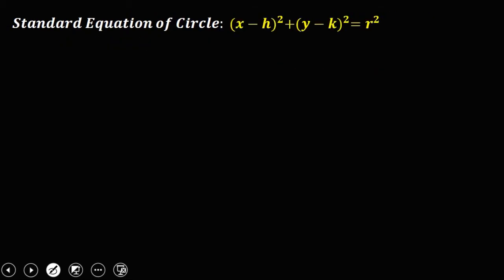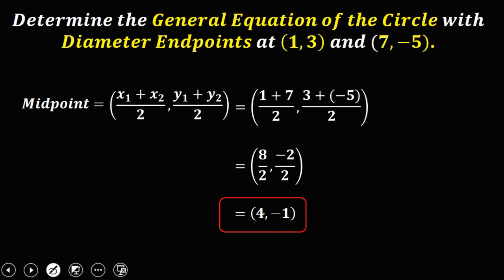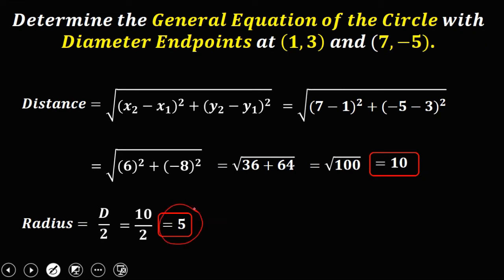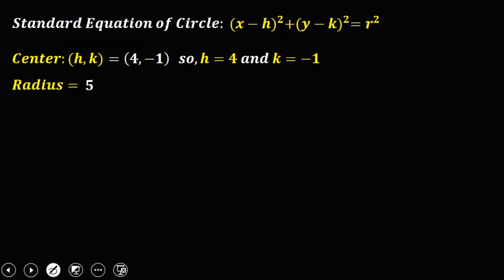From the standard equation of a circle: (x minus h) squared plus (y minus k) squared equals r squared. We have the center — h and k — from the midpoint: h is 4 and k is negative 1. The radius is 5. Now substitute these values into the formula.